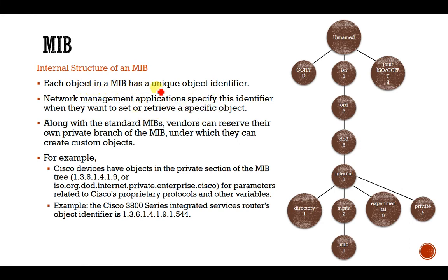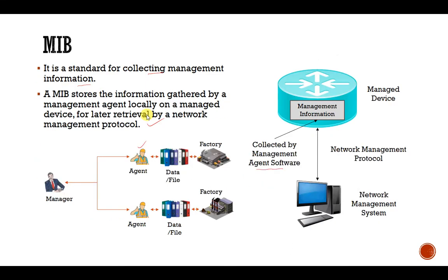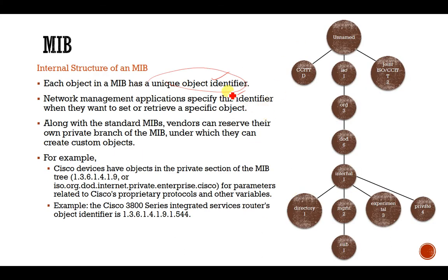Each object in the MIB application specifies an identifier when they want to set or retrieve a specific object, and will be represented with a unique identifier as already discussed. Any network management application running on your system uses MIB. Along with standard MIB, vendors can define their own private branch of MIB under which they can create custom objects. There is a facility to create custom objects.